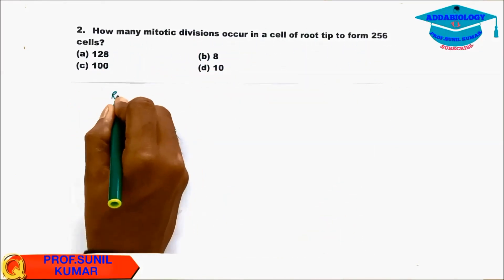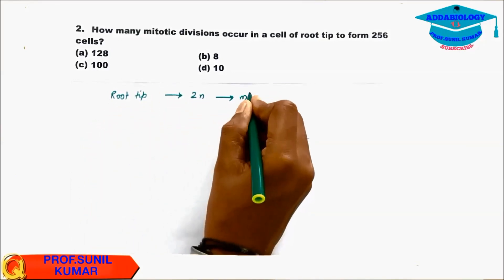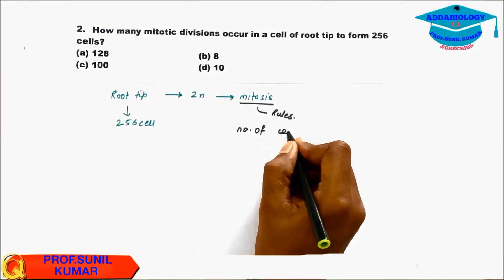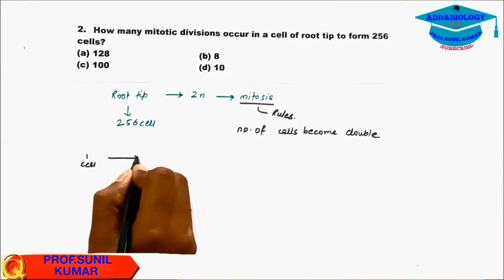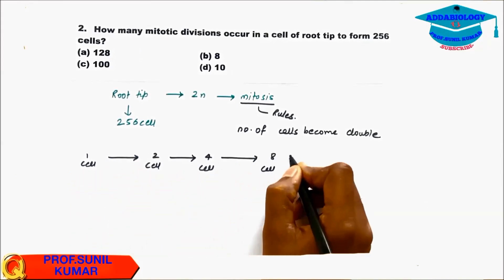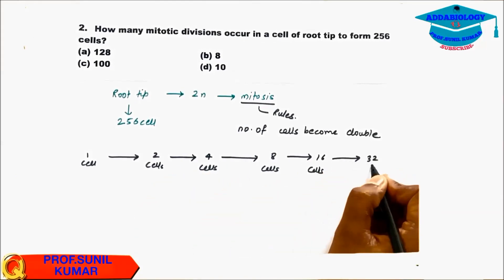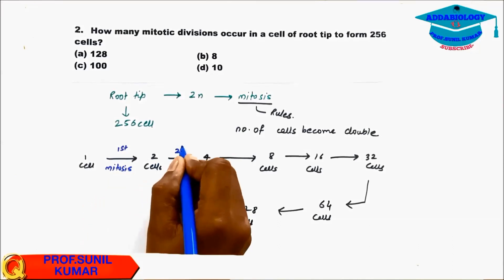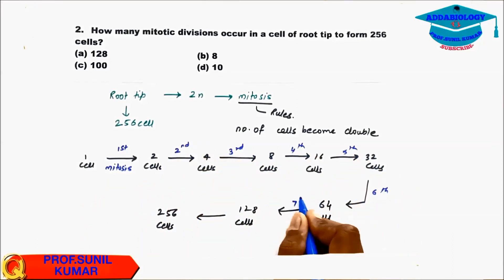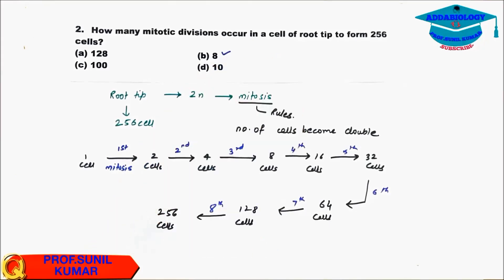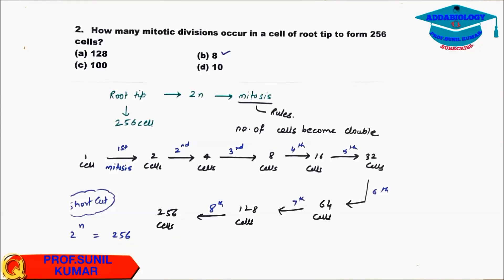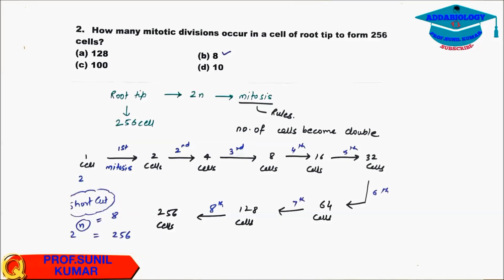Question 2: How many mitotic divisions occur in the root tip to form 256 cells? Root tip is 2n and undergoes mitosis. In mitosis, cells always double: 1→2→4→8→16→32→64→128→256. That is 8 divisions. The shortcut formula is 2^n = 256, giving n = 8. So 8 mitotic divisions are required.